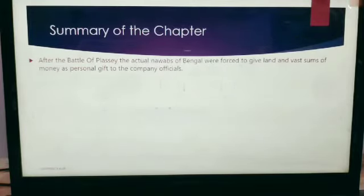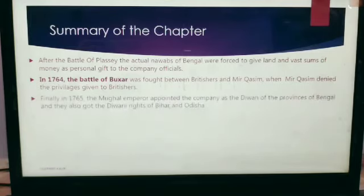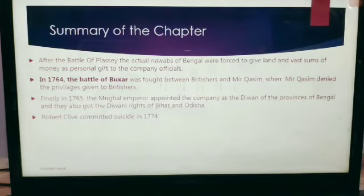After the Battle of Plassey, the actual Nawabs of Bengal were forced to give land and vast sums of money as personal gifts to company officials. In 1764, the Battle of Buxar was fought between the British and Mir Qasim, when Mir Qasim denied the privileges given to the British. Finally in 1765, the Mughal Emperor appointed the company as the Diwan of the provinces of Bengal, and they also got Diwani rights of Bihar and Odisha. Robert Clive committed suicide in 1774 when he was caught in corruption.